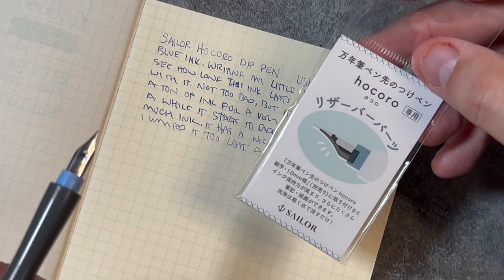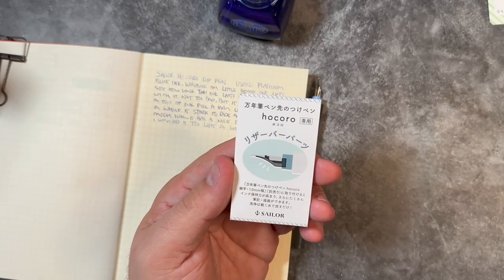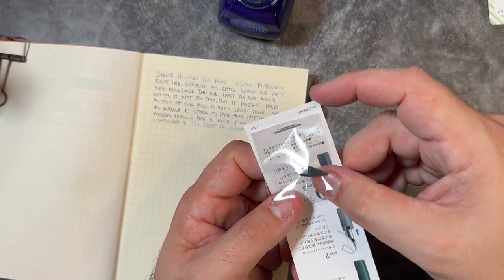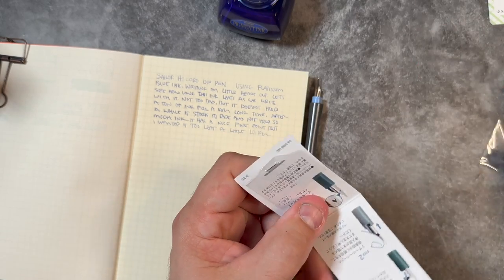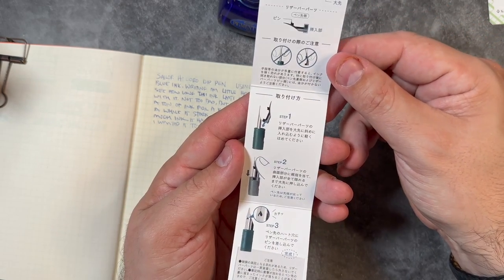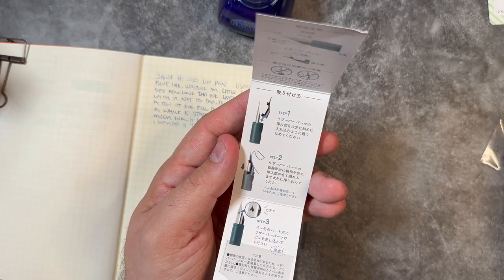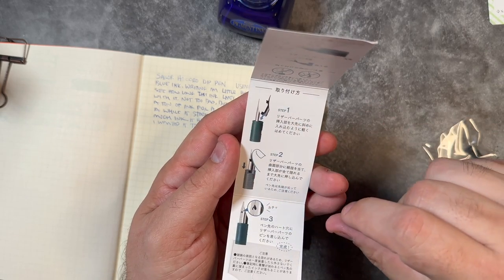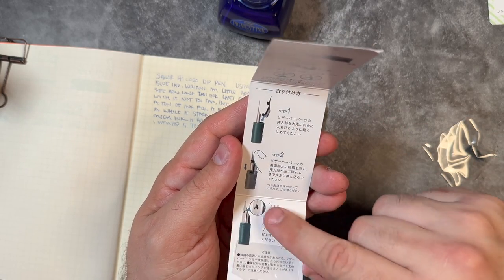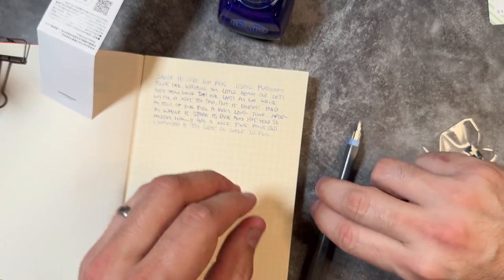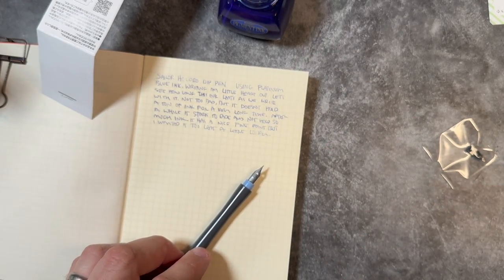So I've gone ahead and unwrapped it here. And when we go ahead and open this up, you'll see we have the small feed here in the bottom. And then our instructions on how to do this. So I think it's just super easy, hopefully, to pop this on here. We'll see exactly how it works out. But you're just popping into the tip, you're pushing it up against the nib, and then we should be able to see that black feed behind this here. So let's go ahead and see how I do.